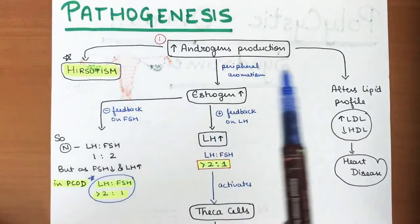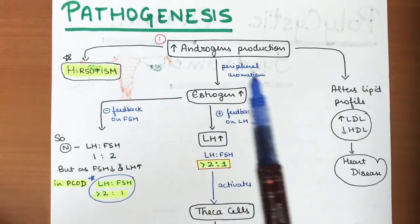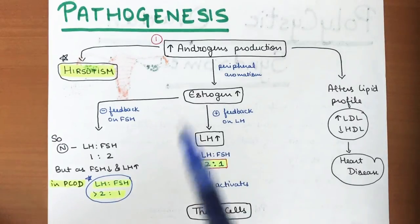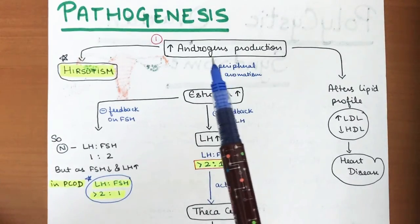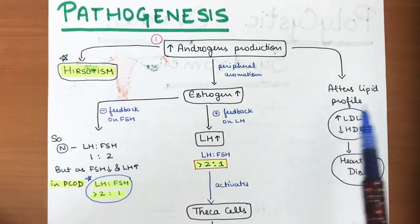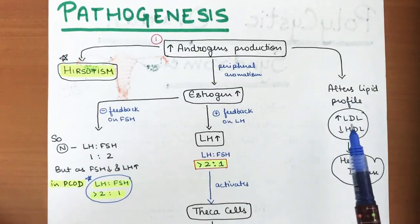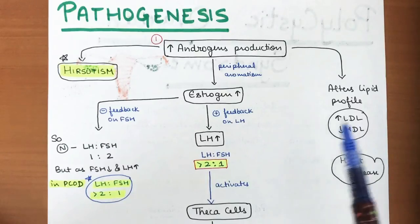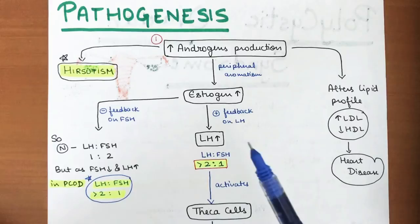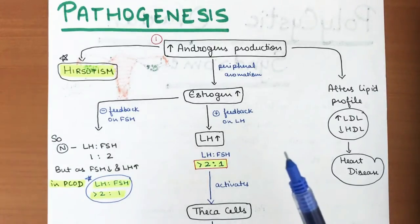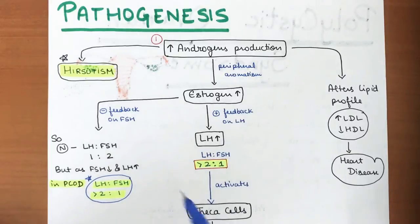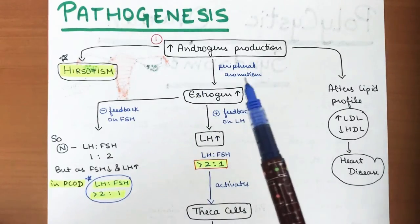In the pathogenesis, hyperandrogenism — androgens produced in very high amounts — particularly leads to hirsutism, which is abnormal hair growth in females. It also alters the lipid profile of the body, increasing LDL and decreasing HDL, which can lead to heart disease over time.